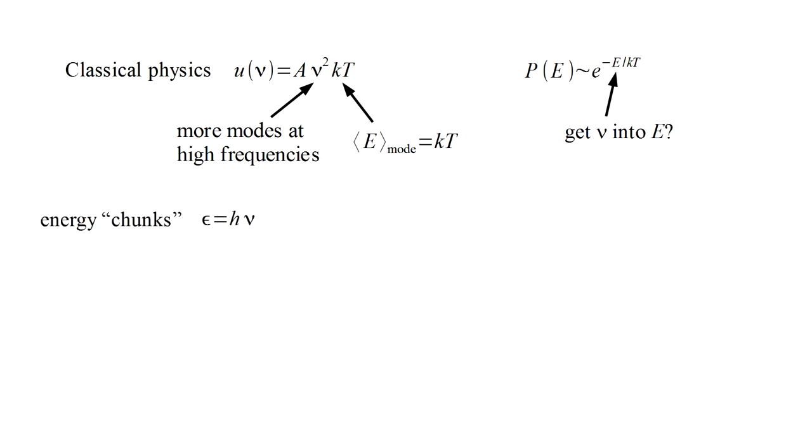We then let epsilon decrease to zero to get our final result. Let's do the same thing but now let the chunks be proportional to frequency. We write epsilon equals some constant h times nu. By letting h decrease to zero, epsilon will decrease to zero for all frequencies, which describes a continuous exchange of energy as before.